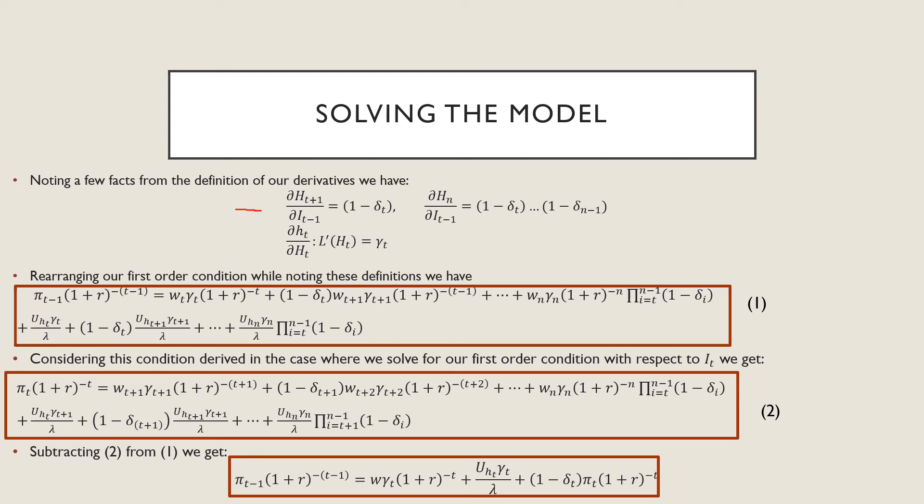Noting a few things from the definitions of our derivatives, you have two things. This one here is just from our law of motion of health capital - we know that is one minus delta t. And likewise if we can say the same thing in period n, that's where we get this product of all n minus one periods of depreciation.